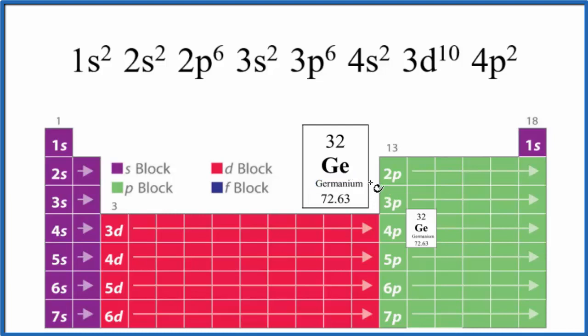When we write electron configurations, the first thing we need to know is how many electrons we have to write the configuration. So on the periodic table we find Ge, it has an atomic number of 32.